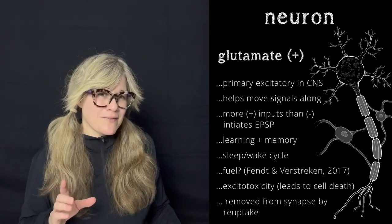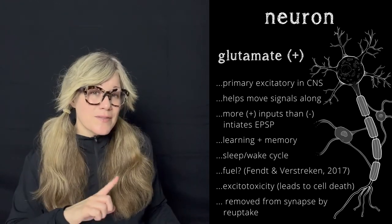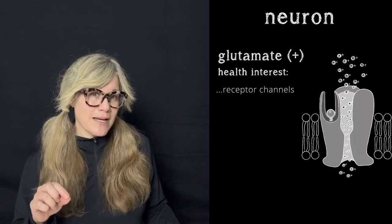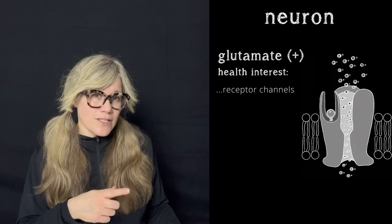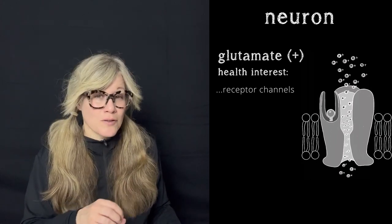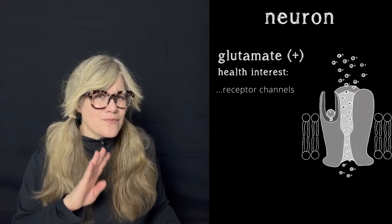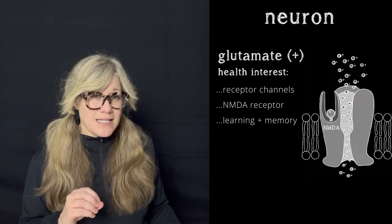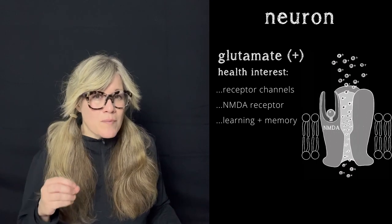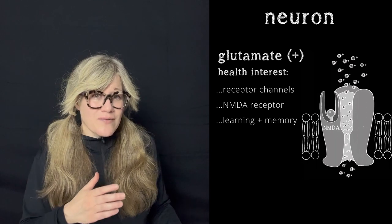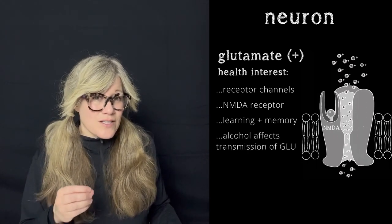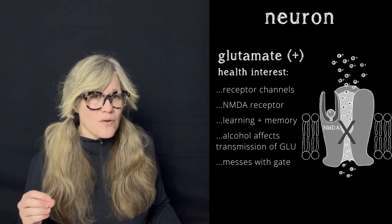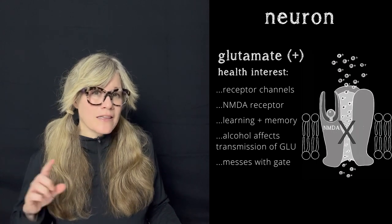Glutamate is usually removed from the synaptic cleft by way of reuptake through transporters in the presynaptic membrane. Of special interest in the health and wellness spheres are glutamate receptor channels — those are the receptor plus ion channel units in the postsynaptic membrane that allow ions to enter the cell, in this case positively charged sodium ions that generate excitatory postsynaptic potentials when glutamate binds to that receptor. Glutamate has four major types of receptors, and one of these is called the NMDA receptor — this receptor is special for many reasons. It plays an important role in learning and memory. You may have also heard it mentioned during discussions of alcohol consumption and withdrawal. Alcohol affects the transmission of glutamate by messing with the gate of this particular NMDA receptor — it's not able to stay open as long as it should, which lessens the excitatory effect of this neurotransmitter and lowers the firing rate of these neurons.